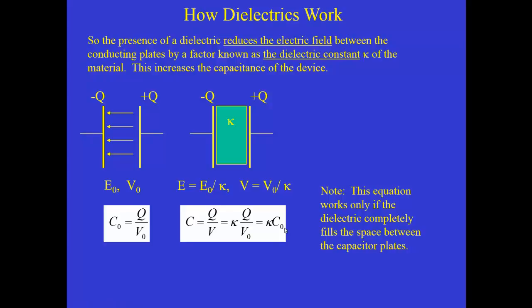And again, this only works if the dielectric completely fills the space. If the dielectric doesn't completely fill the space, then we would have to calculate the potential difference that goes into the denominator of the capacitance equation all the way across. And it would not be simply V0 over kappa. There would be a more complicated expression.